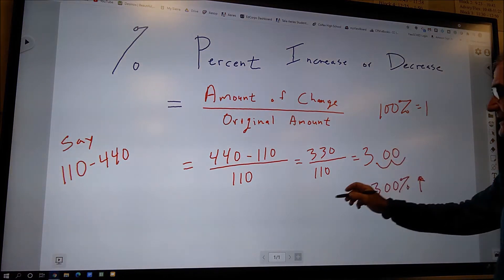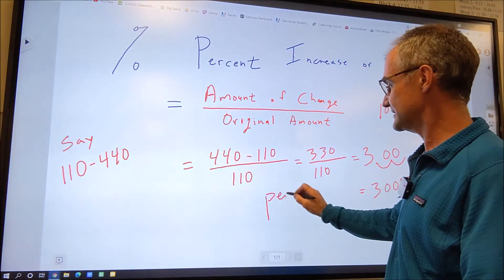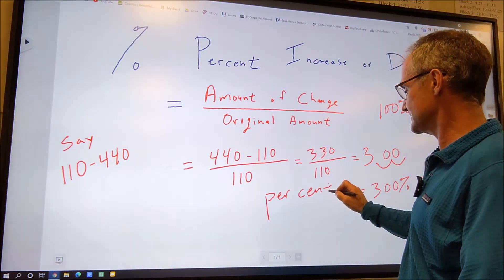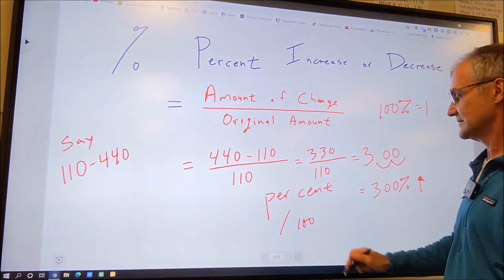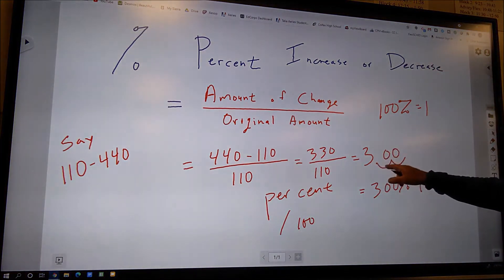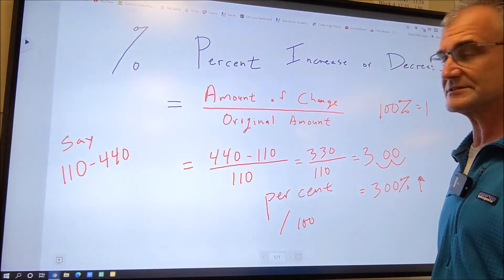Remember, the word percent actually means per cent is 100, so per 100. So 1 is equal to 100%. You've got to take your final number and convert it into a percent.